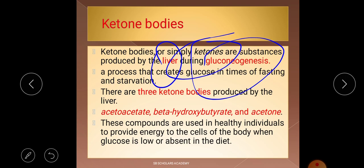Gluconeogenesis is a very important question asked by NTA in examinations. Students are often confused between glycolysis and gluconeogenesis — you must be clear on this distinction. Gluconeogenesis is the process of creating glucose when the body is fasting or starved. During this process, the liver produces ketone bodies.